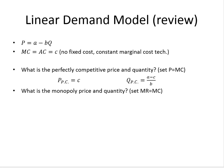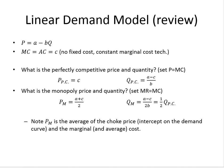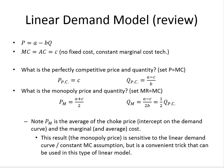For the monopoly, the first-order condition is marginal revenue equals marginal cost. Setting those equal, we find the quantity traded under monopoly. The monopoly restricts output by 50% of what the competitive firm produces. Plugging that quantity into the demand curve gives us the monopoly price, which is the average of the choke price A and the marginal cost C. This result is sensitive to the model being linear with a flat marginal cost function.